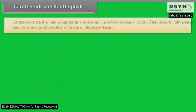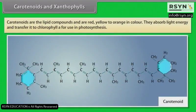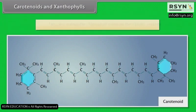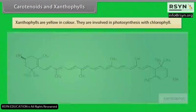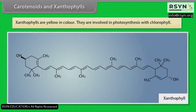Carotenoids are lipid compounds, red, yellow to orange in colour. They absorb light energy and transfer it to Chlorophyll A for use in photosynthesis, and also protect the chlorophyll molecule from photo-oxidation. Xanthophylls are yellow in colour and are involved in photosynthesis alongside chlorophyll.